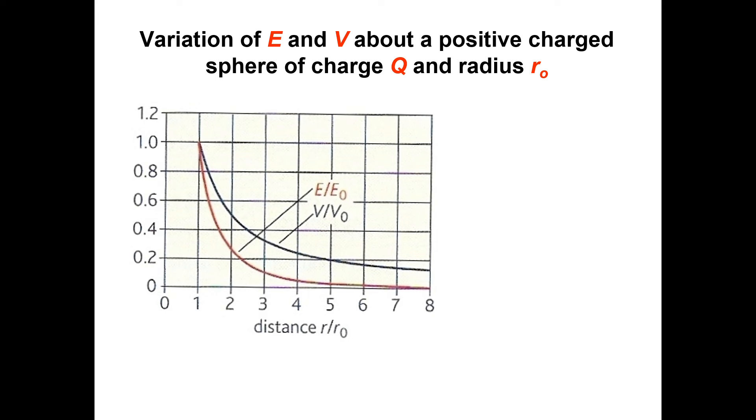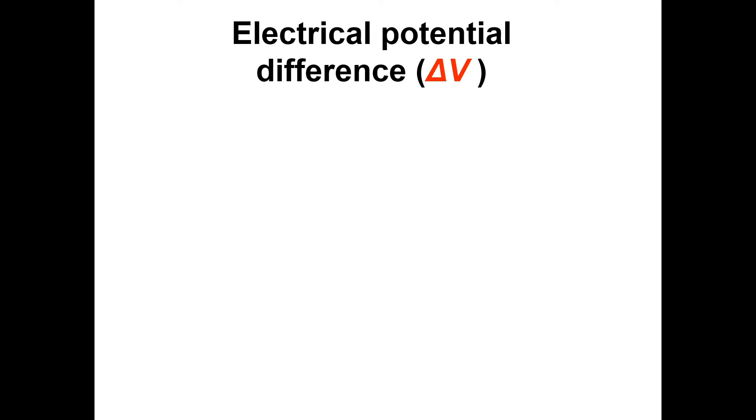You've got graphs here of the variation of both field strength and potential about a positive charge. One of those is 1 over R squared, the field strength, and the potential relationship is 1 over R. Graphs you should be familiar with.